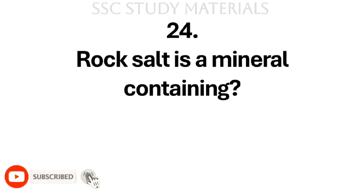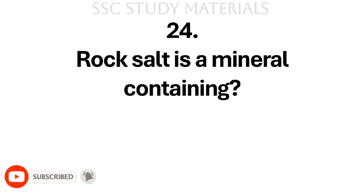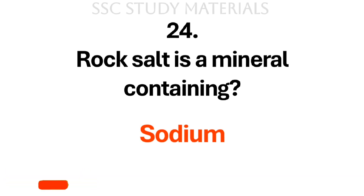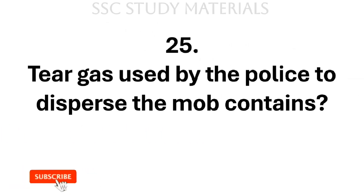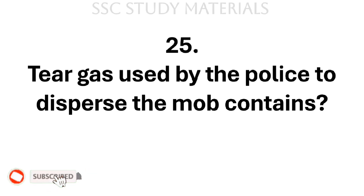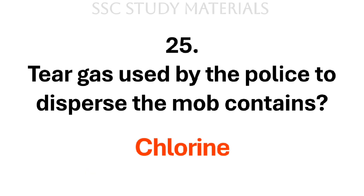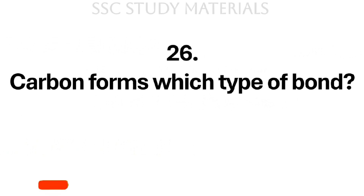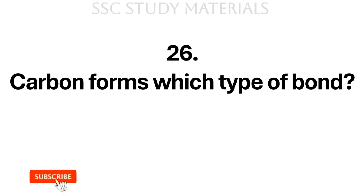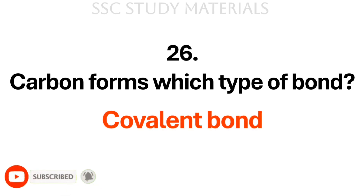Question No. 24: Rock salt is a mineral containing? Answer: It contains sodium. Question No. 25: Tear gas used by the police to disperse the mob contains? Answer: Chlorine. Question No. 26: Carbon forms which type of bond? Answer: Covalent bond.